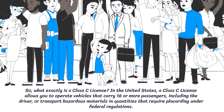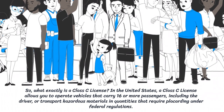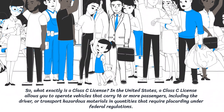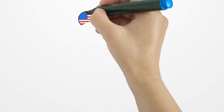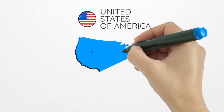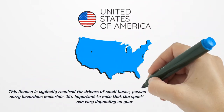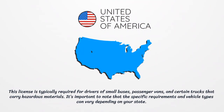The class C license also covers transporting hazardous materials in quantities that require placarding under federal regulations. This license is typically required for drivers of small buses, passenger vans, and certain trucks that carry hazardous materials. It's important to note that the specific requirements and vehicle types can vary depending on your state.